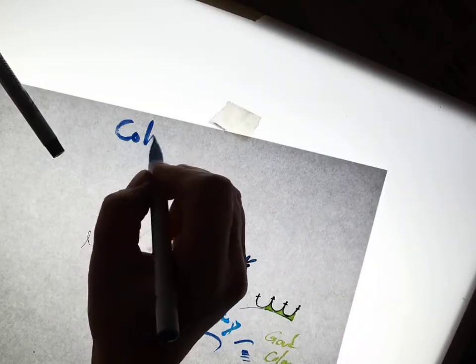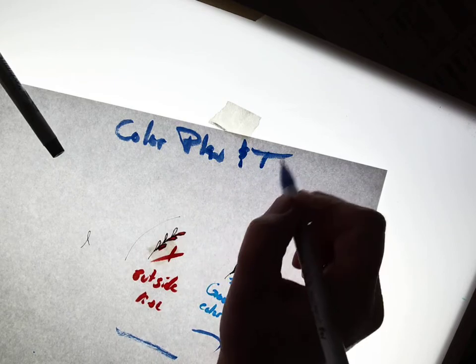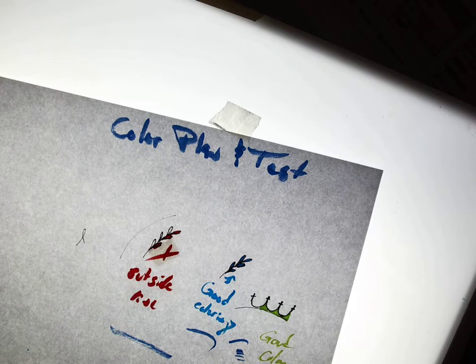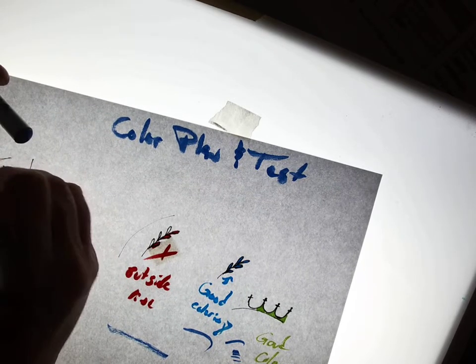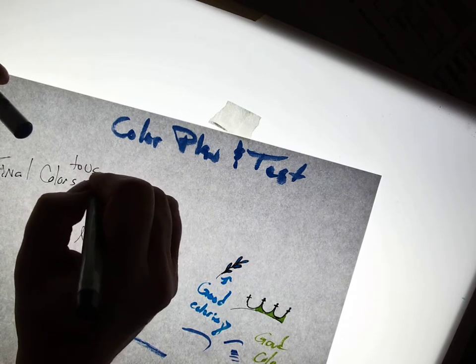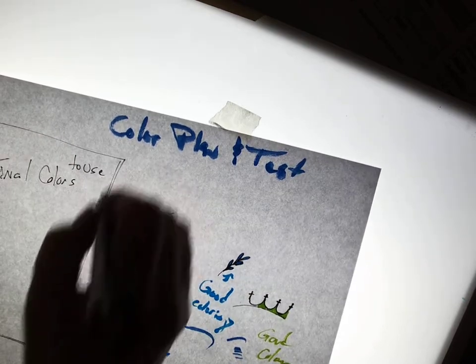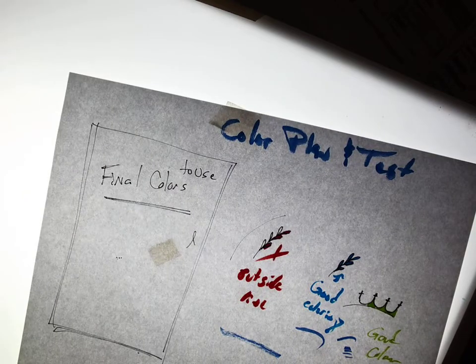This is my color plan and test. When you figure out what colors to use, you should have them. I've got the box right there. Inside, some zentangles.